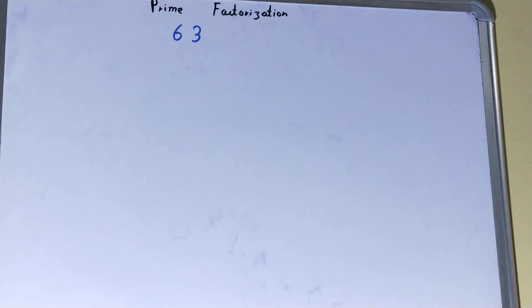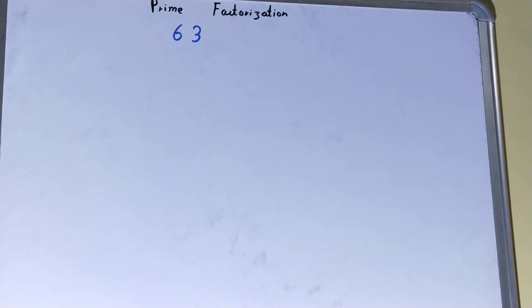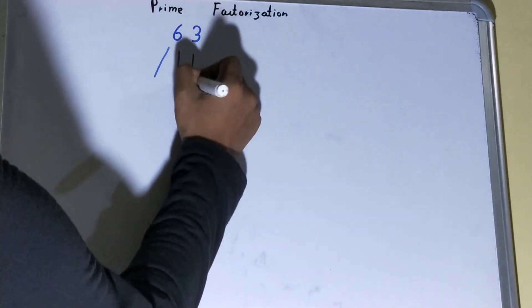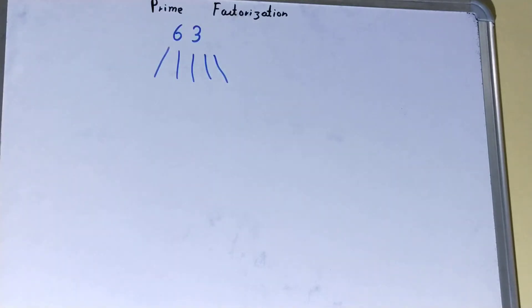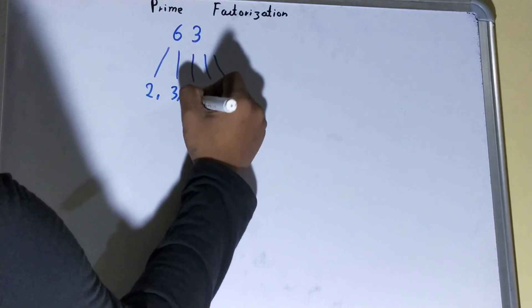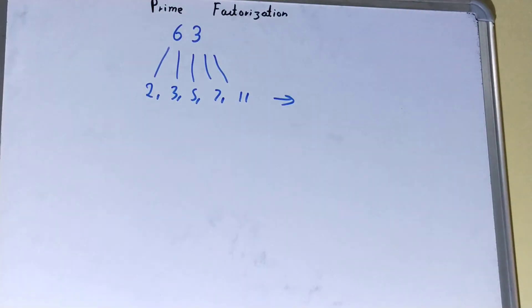So if we talk about prime factorization, it is a process of factorizing the number into a set of prime numbers. Okay, that is we need to factorize this number 63 into a set of prime numbers like 2, 3, 5, 7, 11, and so on it goes on increasing, right?